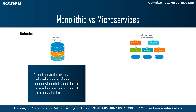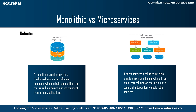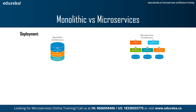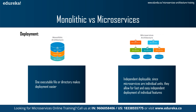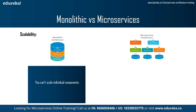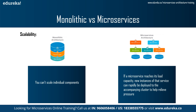Now let's come to our topic for today: monolithic versus microservices. As the first point of comparison, we have the definition. A monolithic architecture is a traditional model of software programs built as a unified, self-contained unit, whereas a microservices architecture relies on a series of independently deployable services. Secondly, we have deployment: in monolithic architecture, one executable file or directory makes deployment easier, whereas in microservices, being individual units, they allow for fast and easy independent deployment of individual features. Thirdly, we have scalability: in monolithic architecture you can scale individual components, whereas in microservices, due to flexible scaling, if a microservice reaches load capacity, new instances of that service can rapidly be deployed to the accompanying cluster to help relieve pressure.